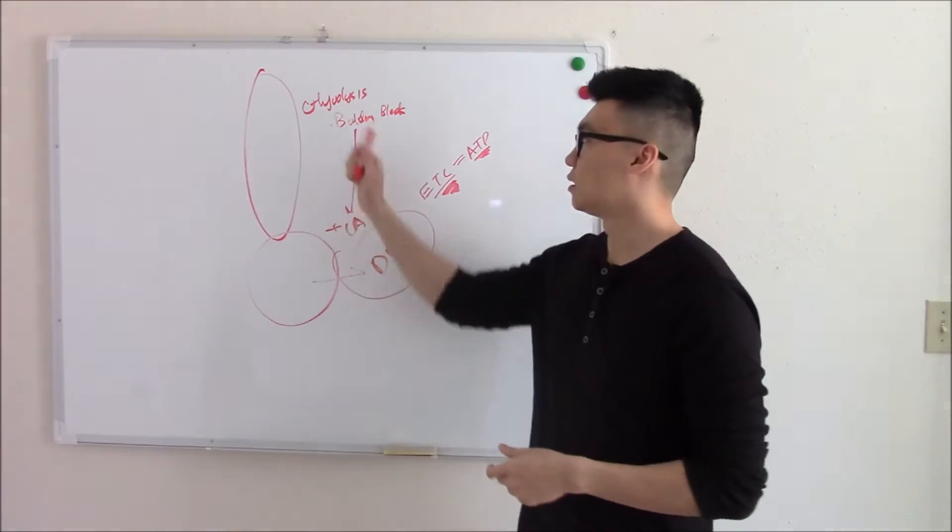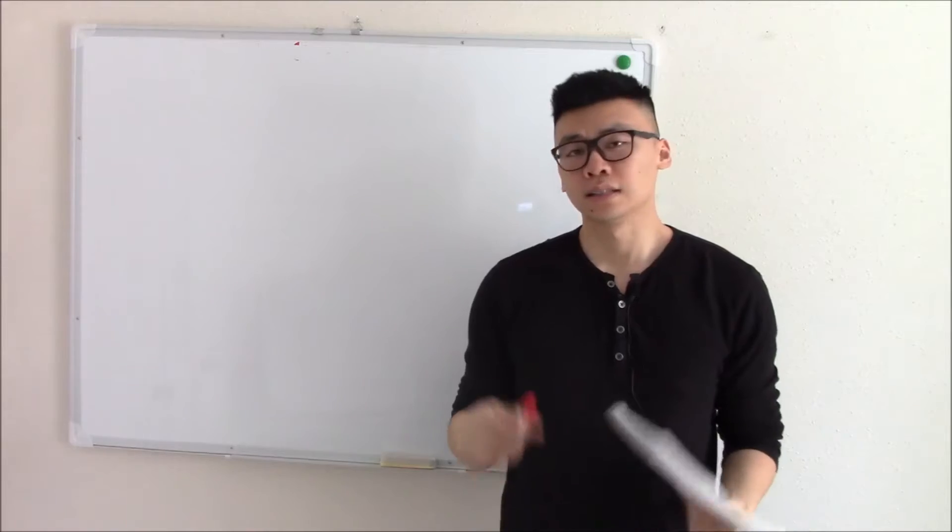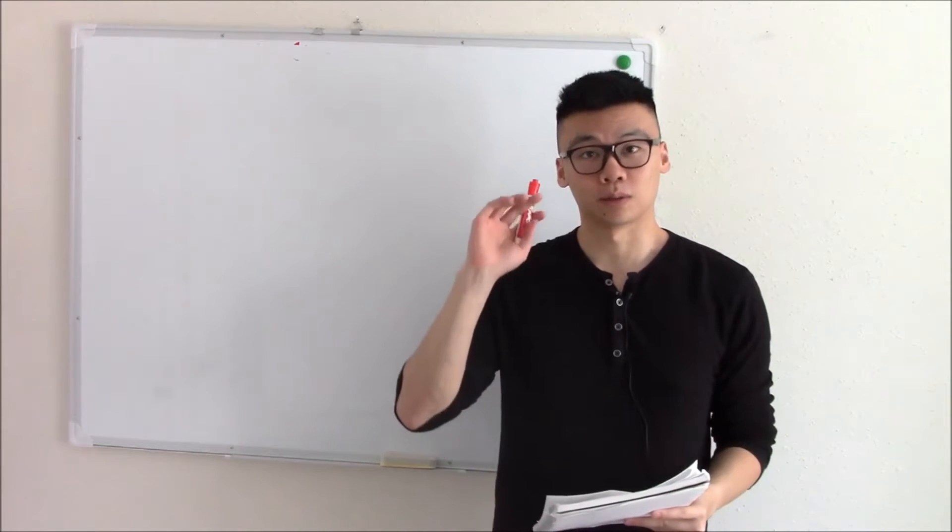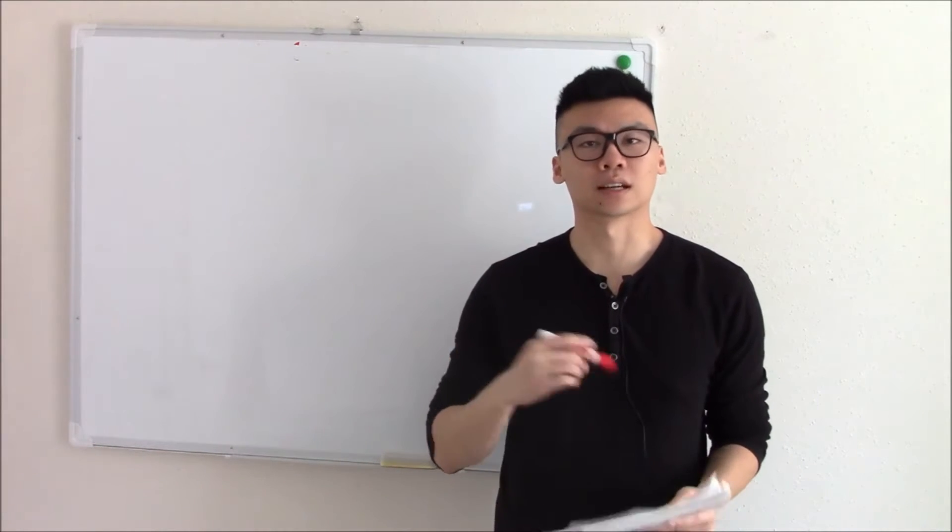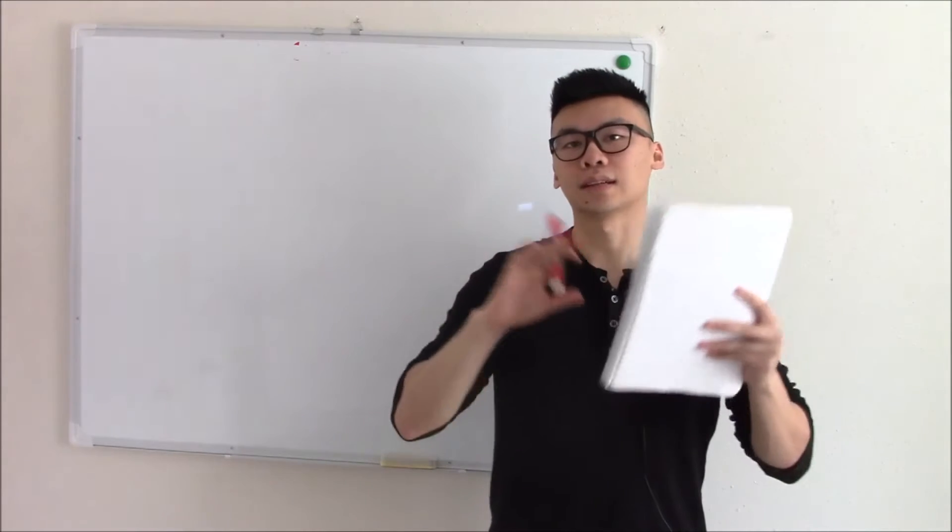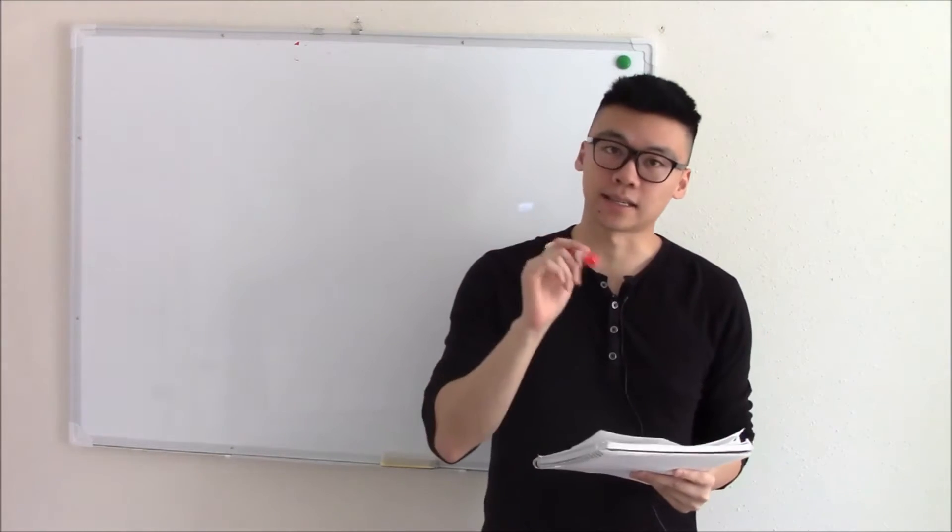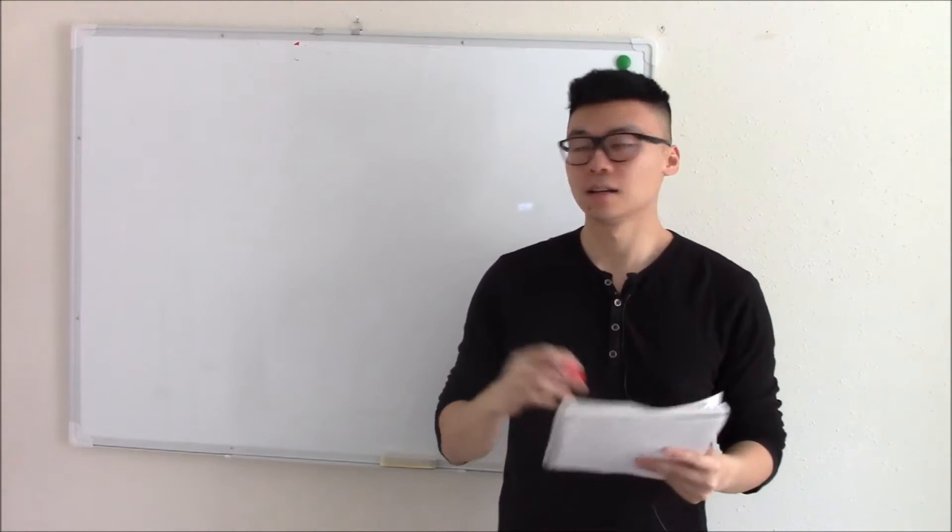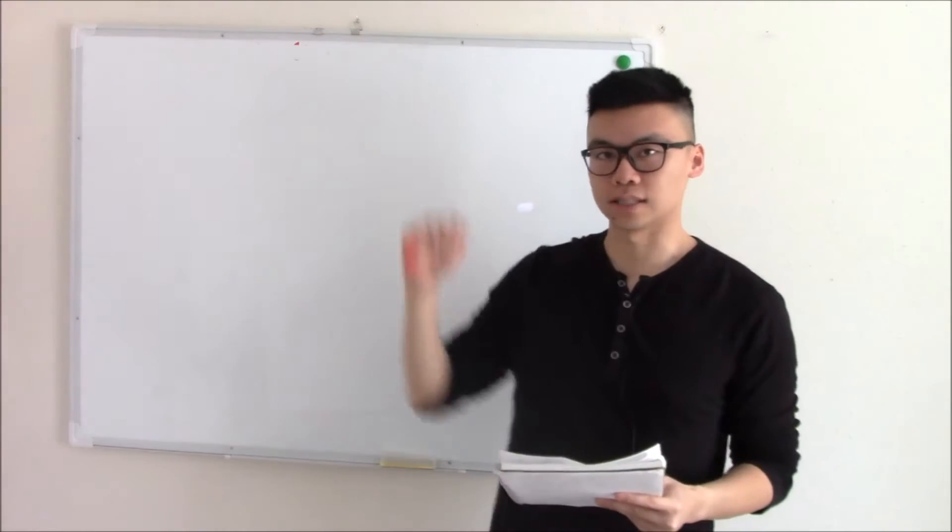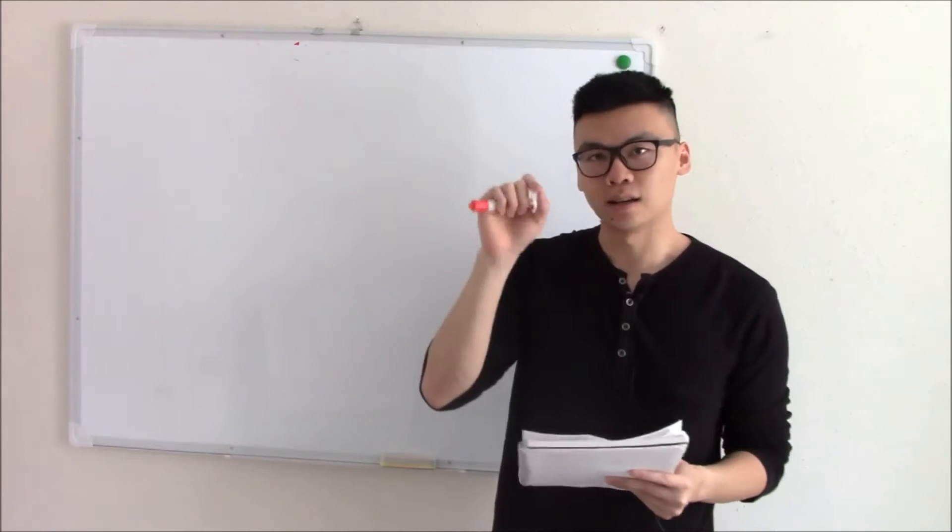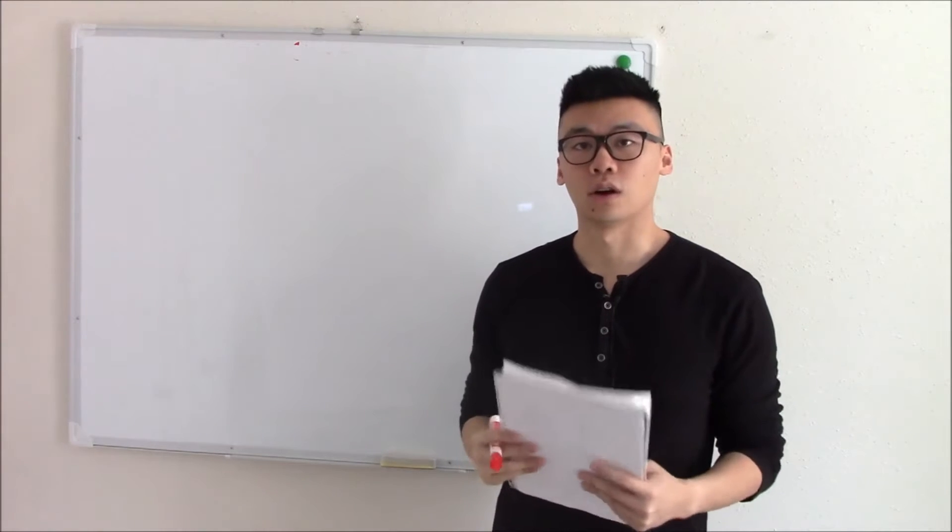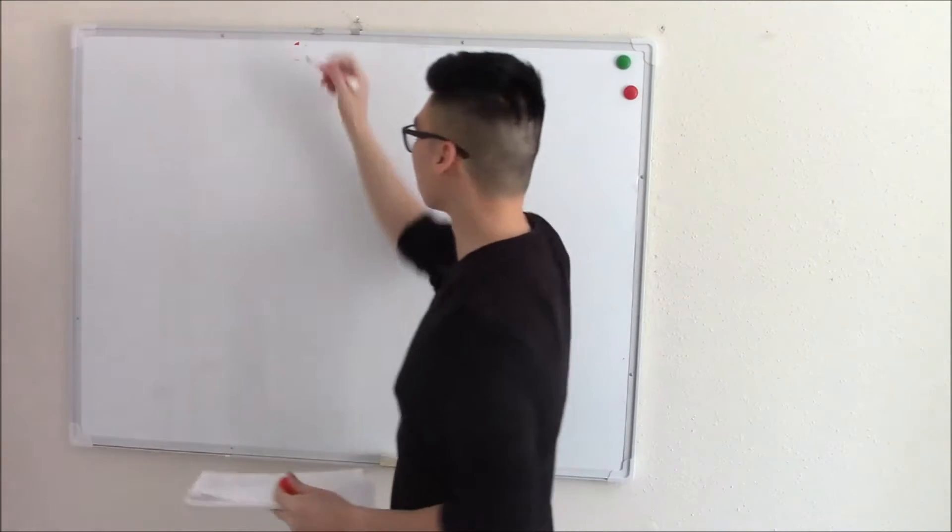We're going to start first with glycolysis. It takes about a dozen steps to go from glucose to the building block in glycolysis. And it's important to look at the big picture first, not to get caught up in the nitty gritty facts. So we're going to go through all the steps and all the enzymes and then pinpoint what facts they want you to know for each step.